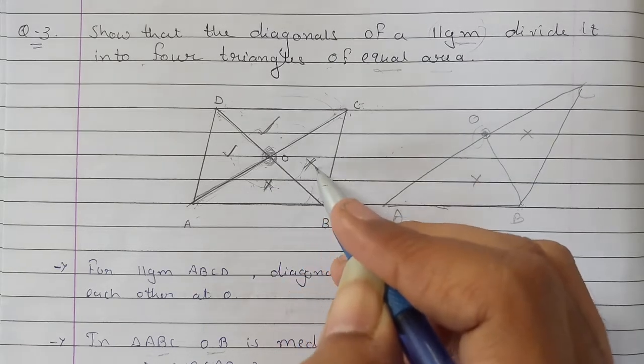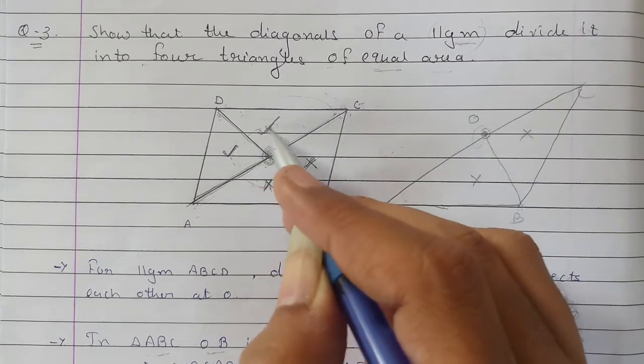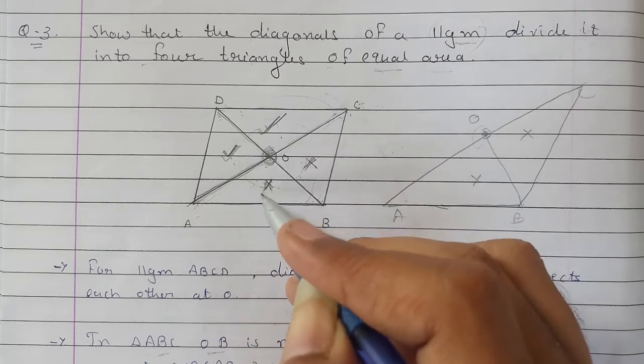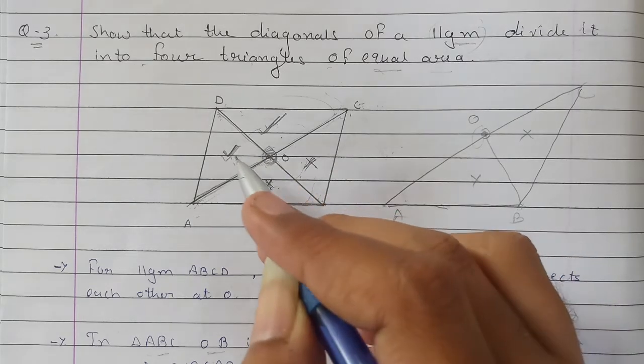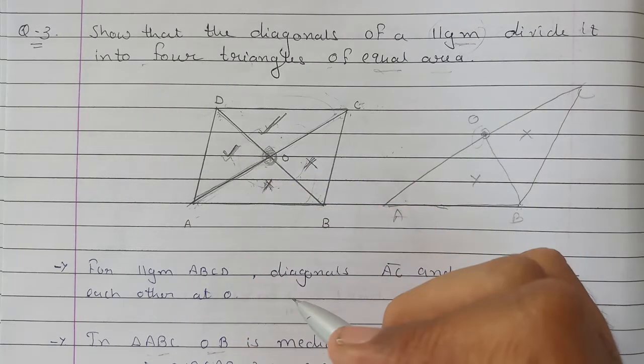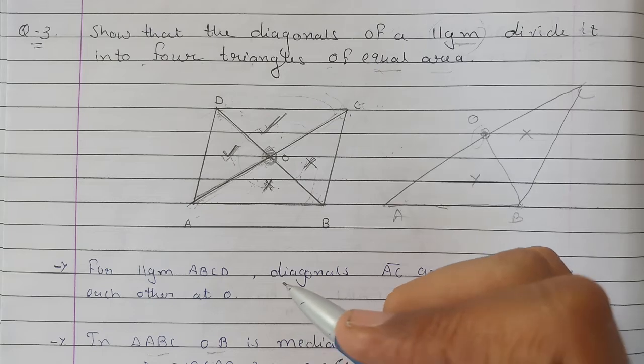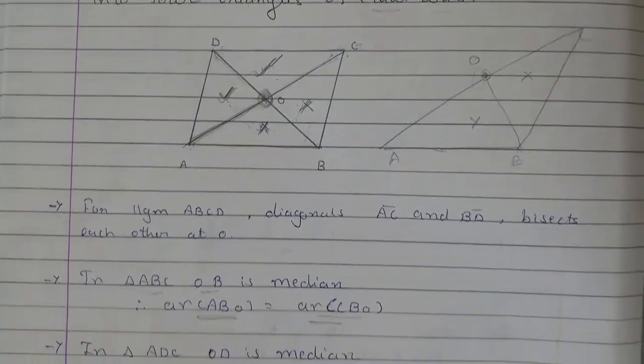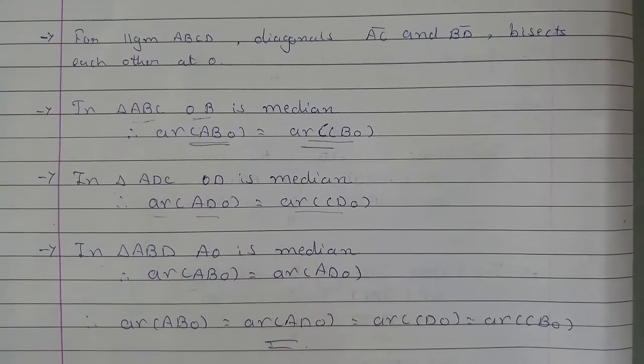We proved these pairs equal, then those pairs equal. Therefore, all four triangles have equal area, which is what we needed to prove. You can observe how to write this from here; take a screenshot.